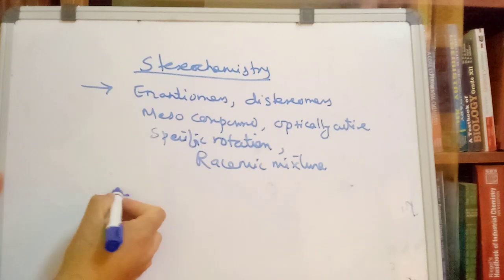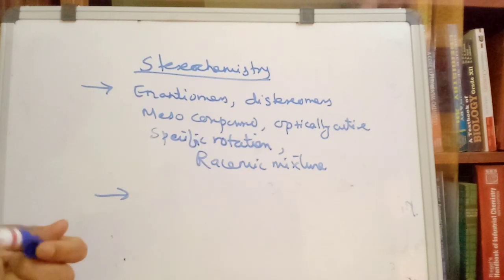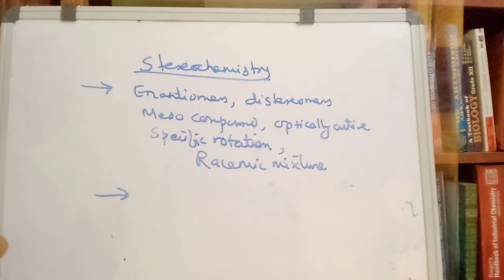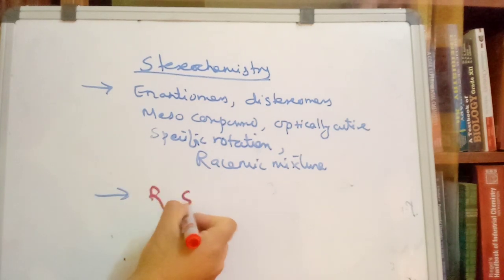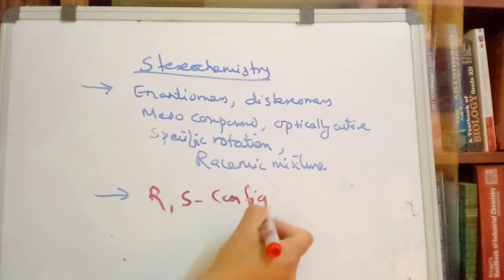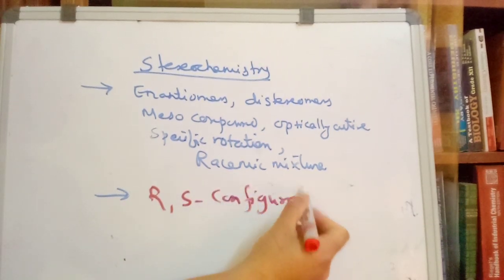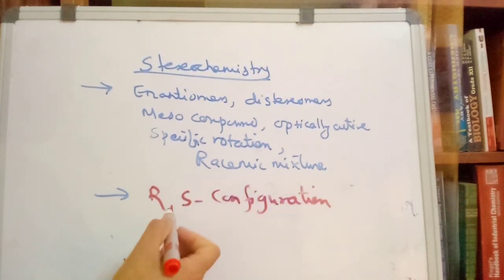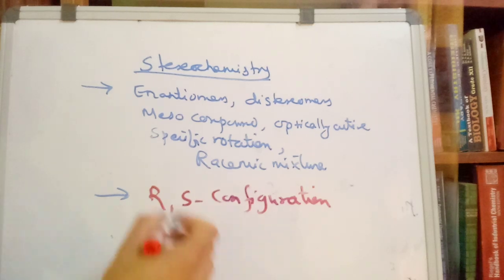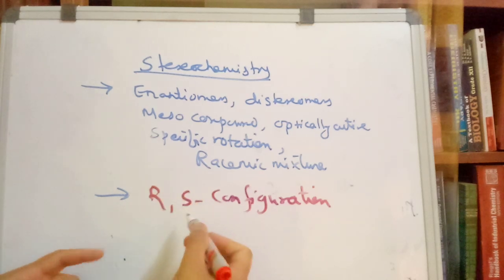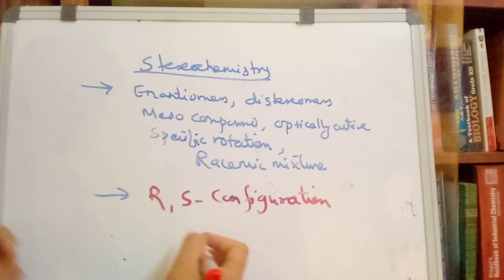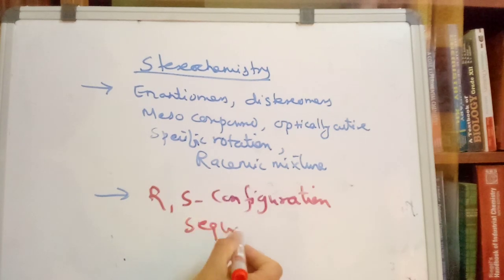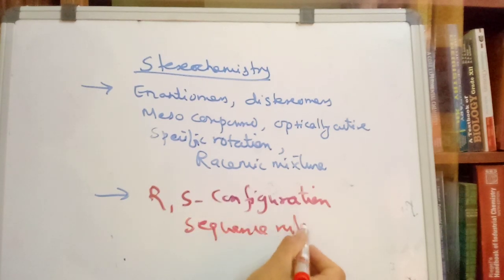What are D and L stereoisomers? What is the R/S configuration? The R/S configuration is an important concept. What is the R/S configuration and how does it relate to assigning priorities?